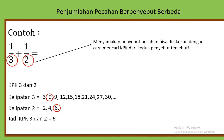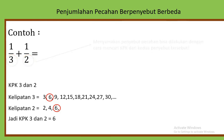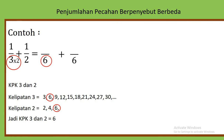Berarti sama-sama kita jadikan penyebutnya 6. 3 kali berapa supaya menjadi 6? Kita kalikan 2. Otomatis pembilangnya juga dikali 2. Selanjutnya, 2 kali berapa supaya menjadi 6? Dikali 3. Otomatis pembilangnya juga dikali 3.